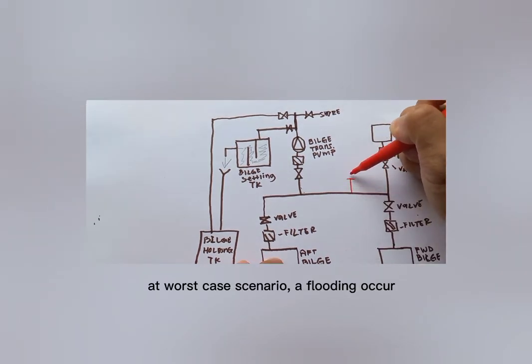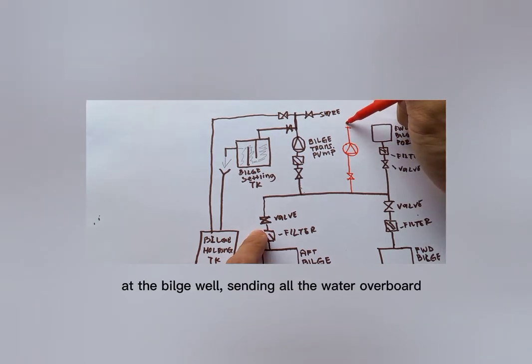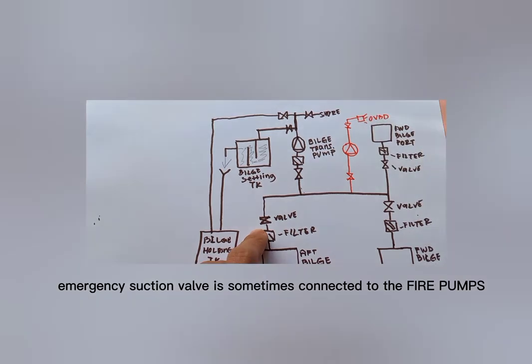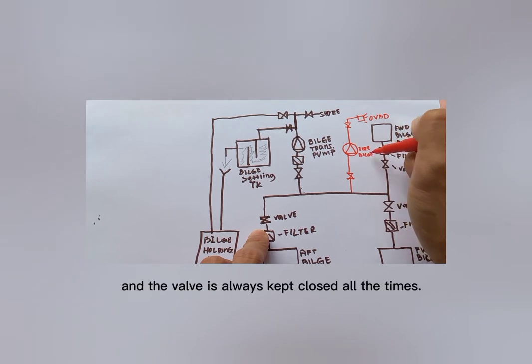At worst case scenario, if flooding occurs, emergency suction is installed to suck all the water at the bulge well sending all the water overboard. Emergency suction valve is sometimes connected to the fire pumps and the valve is always kept closed all the times.